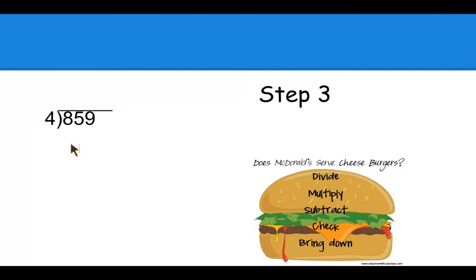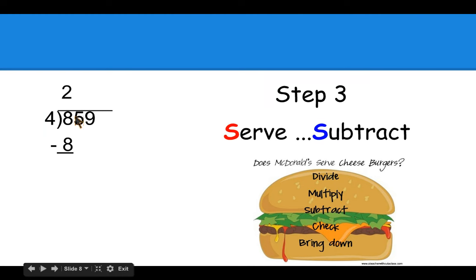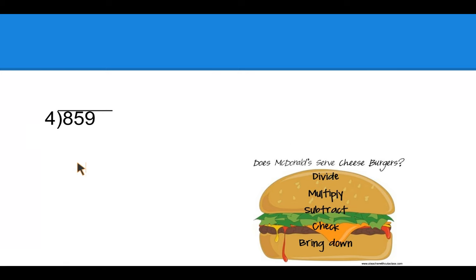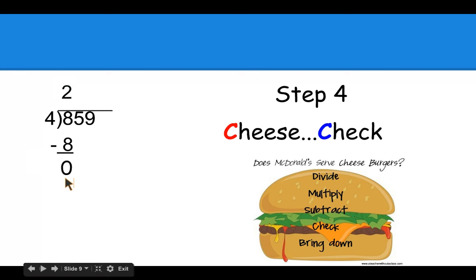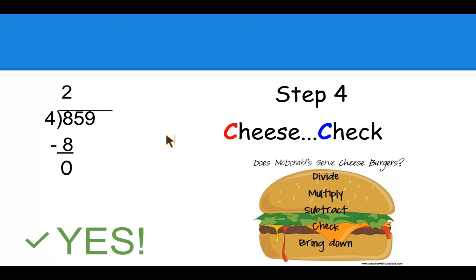Step three, S does McDonald's serve for subtract. So we're going to subtract eight minus eight, which is zero. Step four, C does McDonald's serve cheese or check. Here we're going to check that our answer when we subtract is smaller than our divisor. If it is, we can move on. And yes, it is.